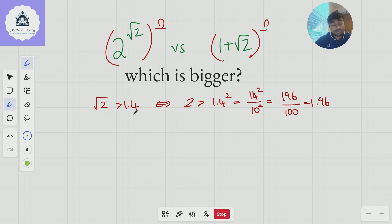So root 2 is bigger than 1.4, I know that 1.4 times 5 is 9, so a whole number. So what I'm going to do is raise both sides to the power of 5.